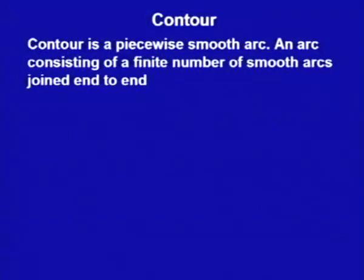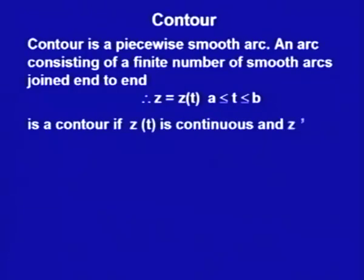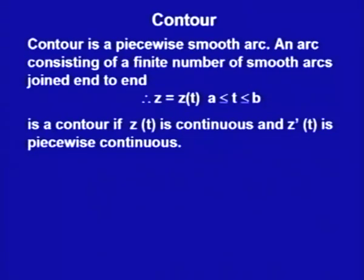So what is a contour? A contour is a piecewise smooth arc — that means an arc consisting of a finite number of smooth arcs joined end to end. If z = z(t) is defined on the interval [a, b], it is a contour if z(t) is continuous and z'(t) is piecewise continuous. Recall that a smooth arc means the arc is differentiable and its derivative is not zero on the whole interval. So piecewise smooth means z(t) is continuous, z'(t) is piecewise continuous, and z'(t) is not zero at any point on [a, b].